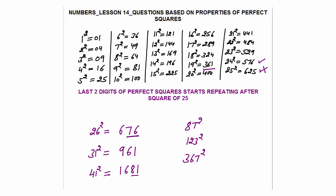Yes — 9 squared is 81, so the last two digits of 41 squared must have appeared in the squares of 1 to 25. If you calculate 87 squared, that is 7569. Have the last two digits 69 appeared earlier? Yes — in the square of 39, the last two digits are 69.